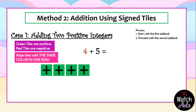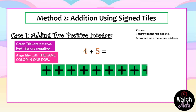Since five is positive, we use green tiles. We align them with the other green tiles. We add five more green tiles and then count them all. Nine green tiles means positive nine, or simply nine.